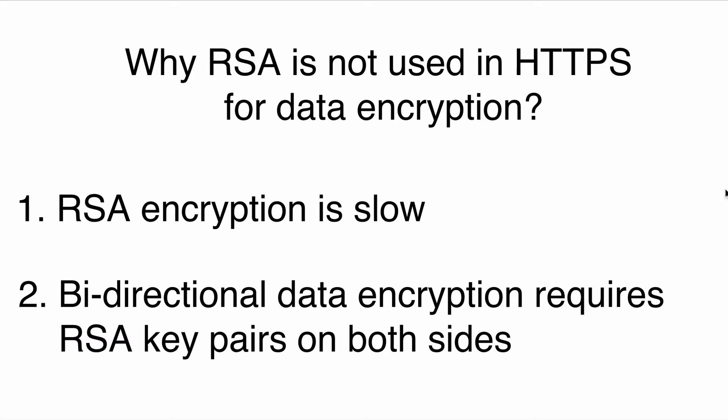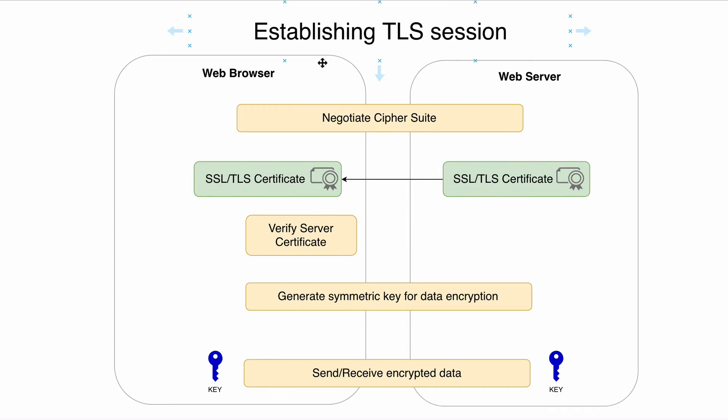In the previous lecture I answered the question of why RSA is not used in HTTPS for data encryption. In HTTPS, symmetric encryption is used for data transfer, and we need to create a key that will be used for data encryption. That key must be owned only by the web browser and web server, so nobody else can get it and decrypt or encrypt the data transferred. Let me explain how a TLS session is established using this diagram.